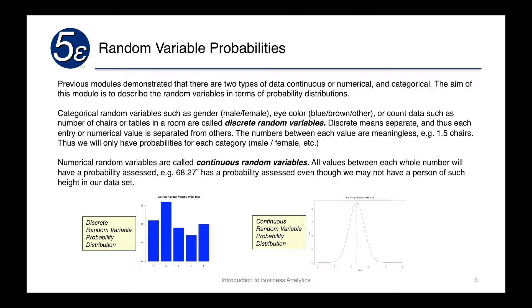Having a half a chair may be something we have in our homes, but it doesn't give us anything that we can really use to actually count with. So we'll only have probabilities for each category, such as male or female, high or low.